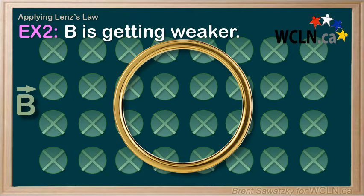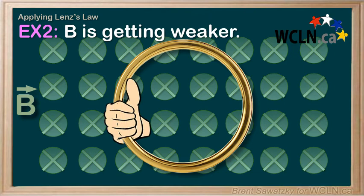So we take our right-hand rule again, in a backwards way so to speak, curling our fingers so that the induced magnetic field is going into the page through the loop. And now we see that our thumb is pointing clockwise. And since the thumb represents the current, we know that the induced EMF is in a clockwise direction.